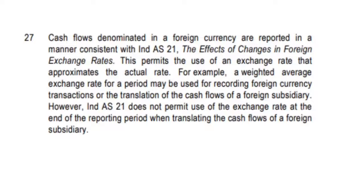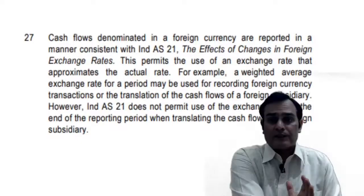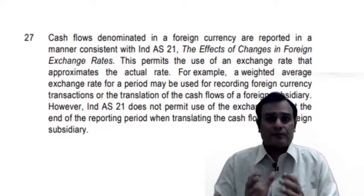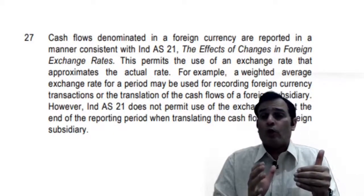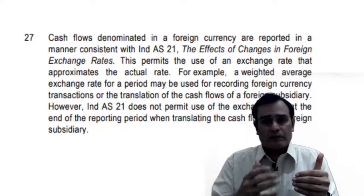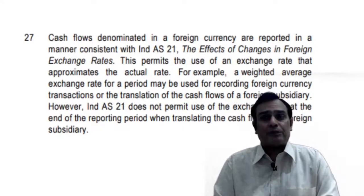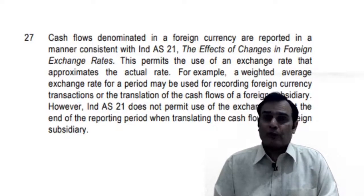It also adds that Ind AS 21 does not permit the use of an exchange rate at the end of the reporting period when translating the cash flows of a foreign subsidiary. In a nutshell, if you've got foreign currency cash flows, the entity has a choice: either apply the rate on the date of cash flow, or if there are no major fluctuations in the exchange rate, the use of a weighted average rate for a particular period is also permissible.